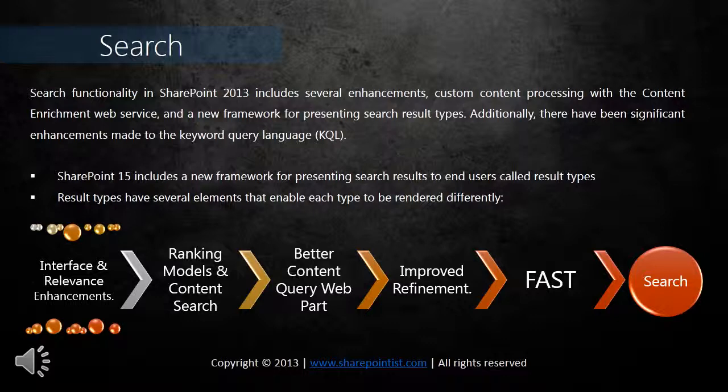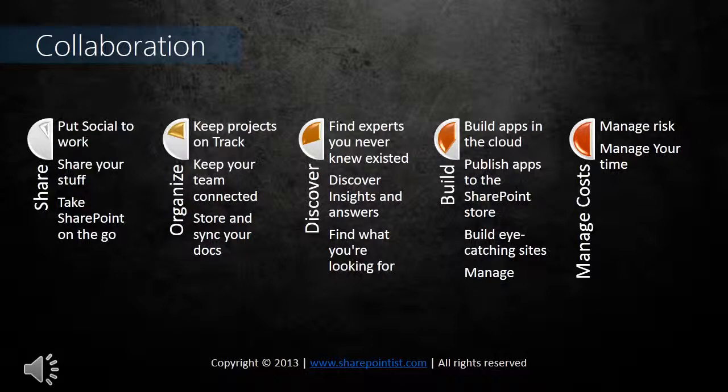Many people think collaboration is the only feature for which SharePoint has been used and that there haven't been many improvements since 2007, but this is incorrect. Share, organize, discover, build, and manage costs — these are the key pillars enabling the collaboration feature. Under 'Share,' social features let you share ideas, discover answers, and track what colleagues are working on. You can publish content from any Office application and share with people inside and outside your organization, even from a mobile phone or tablet.